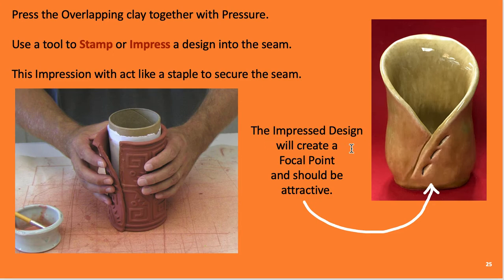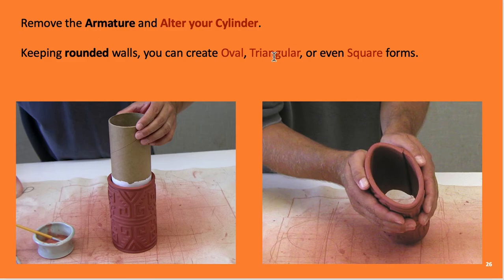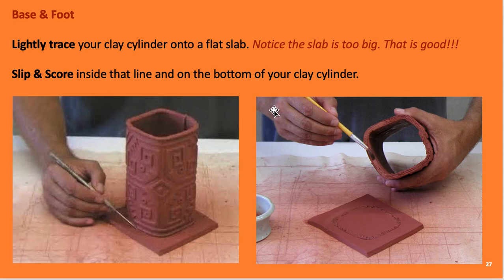The impressed design will create a focal point and should be attractive. Remove the armature and alter the cylinder — notice how it slides out because it wasn't taped. You must keep rounded walls; if you fold to a direct point it will cause cracks. But you can create an oval, triangular, or square-ish form. Don't make it too skinny or it may tip over. He made a square-ish shape — notice the corners are still round.